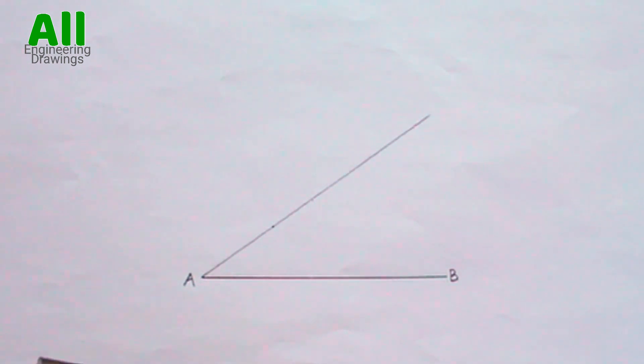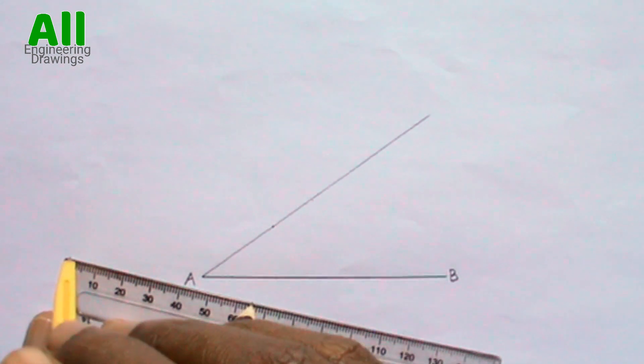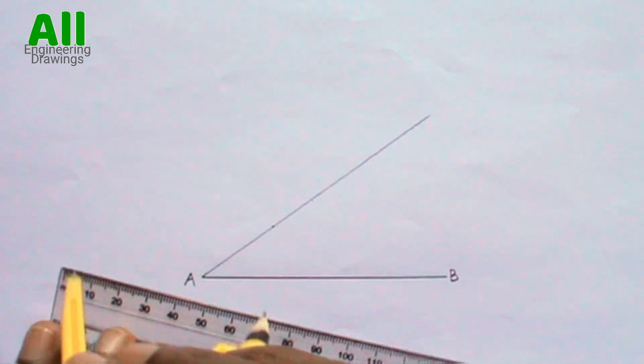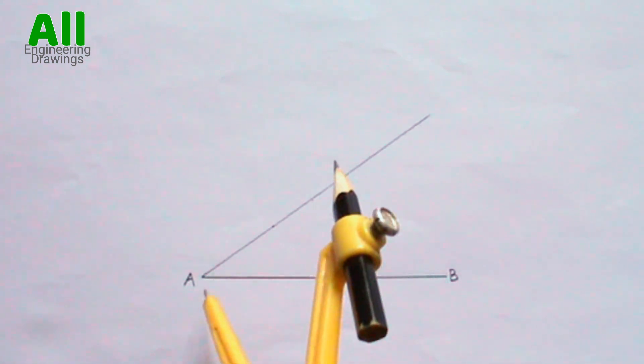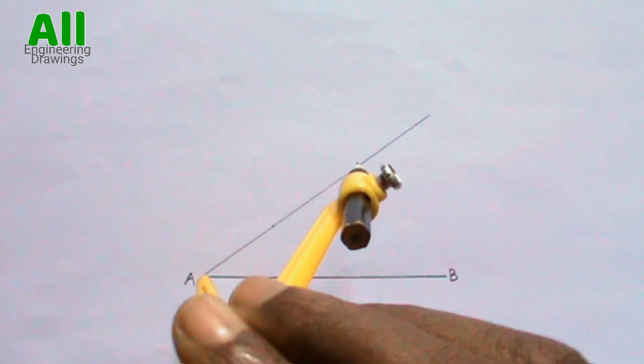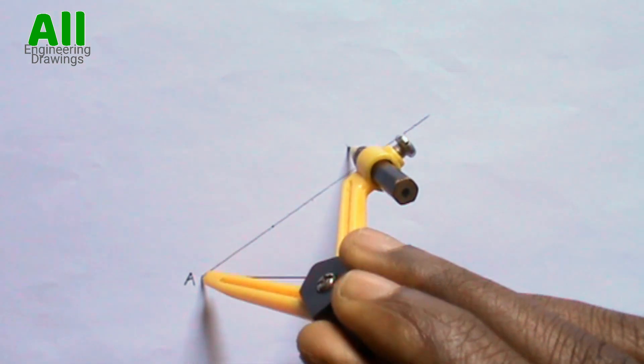Now you have to use your compass to take the length of side AC of your triangle. That is the left side of your triangle. Then you have to place your compass on point A and cut an arc on the line you drew.